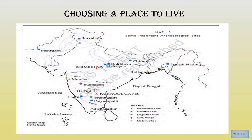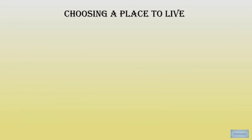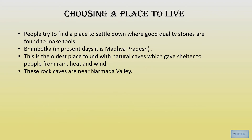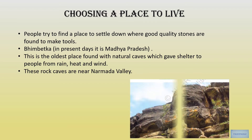People lived in different places throughout the subcontinent. Archaeologists found places where evidence of hunter-gatherers was found, located near sources of water such as rivers and lakes. People also tried to settle where good quality stone was available to make tools. Bhimbetka, in present-day Madhya Pradesh, is a place where the oldest natural caves were found, which gave shelter to people during rain, heat and wind.